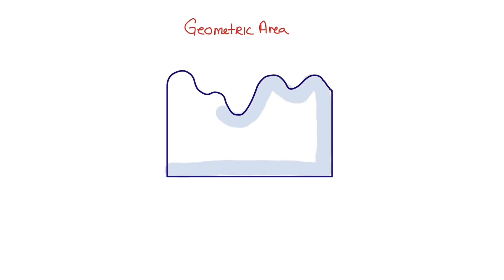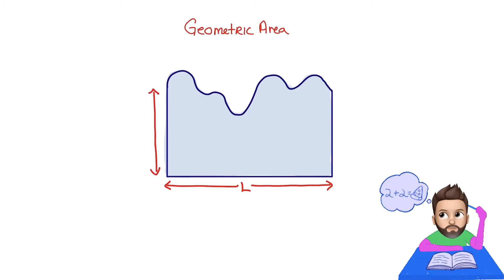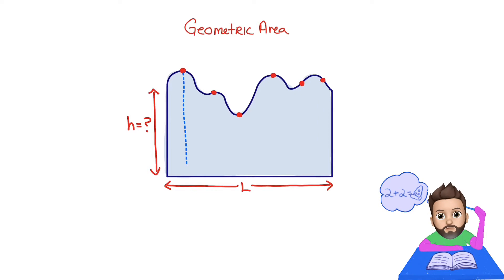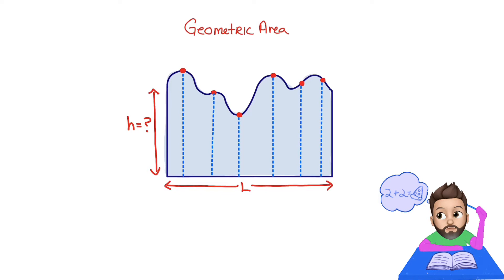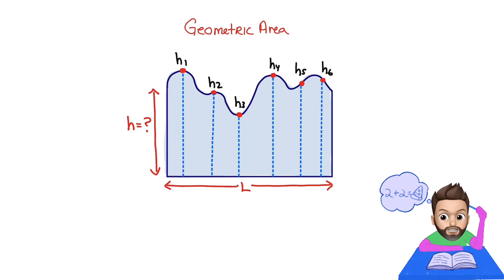The question arises: how would we find an object's area that is irregular such as this one? Maybe it has a straight length, but what is its height? Along different parts of this curve, we see that it has different heights. So we might think about splitting up this area into separate little pieces with different heights.